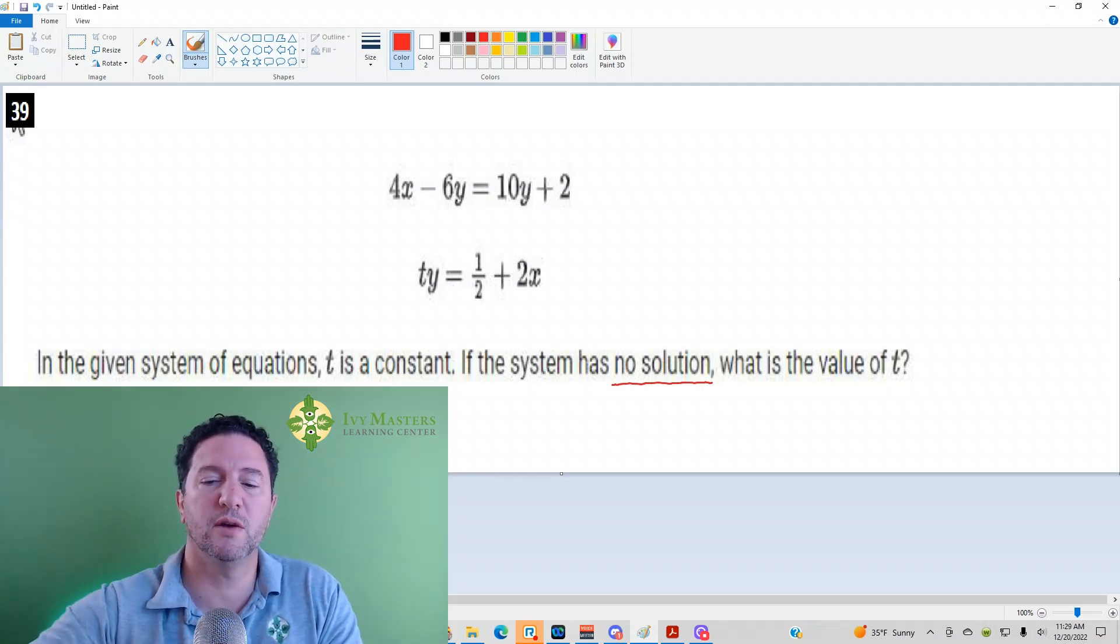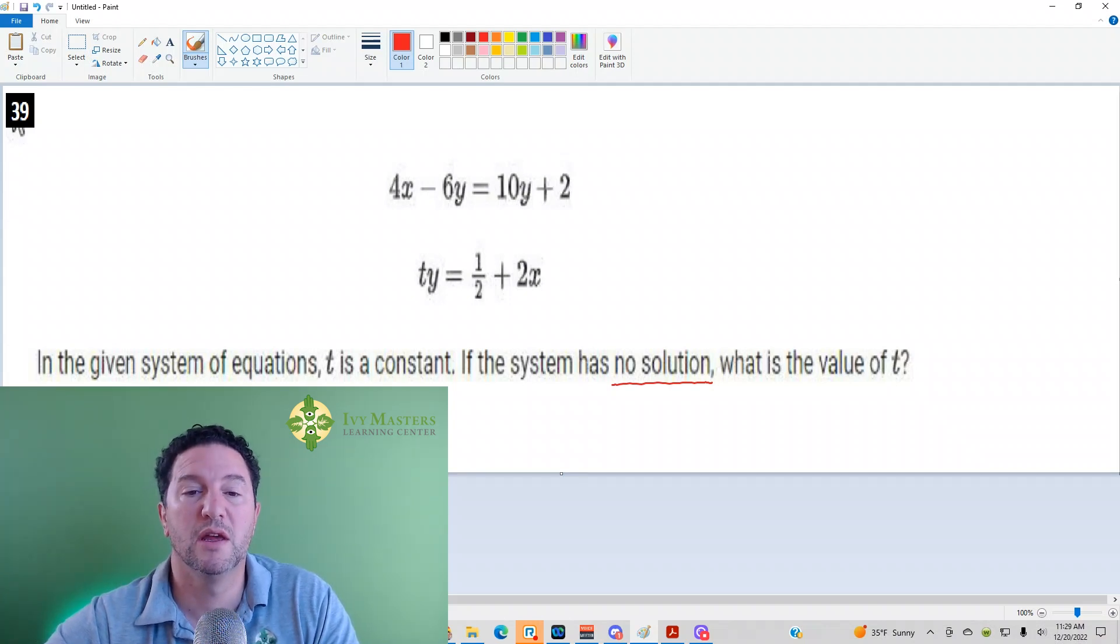One thing you want to understand with no solution: if you've got two linear equations with no solution, it means there's no intersection point, which means the lines are parallel, which means they have the same slope.